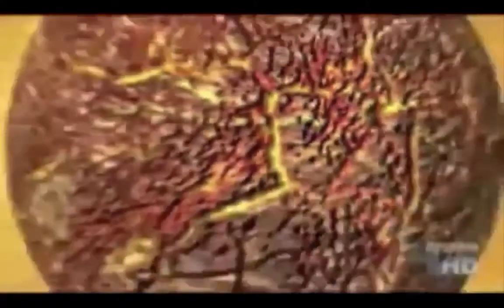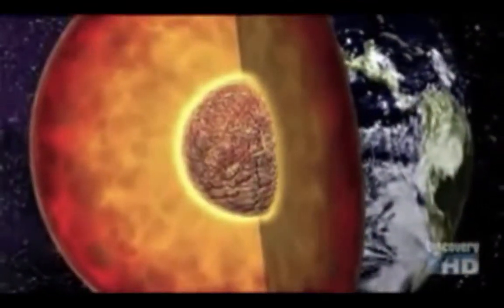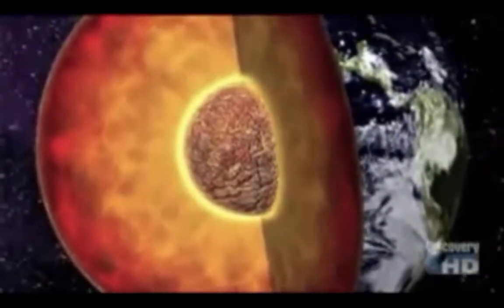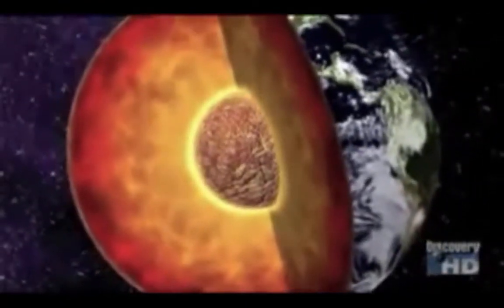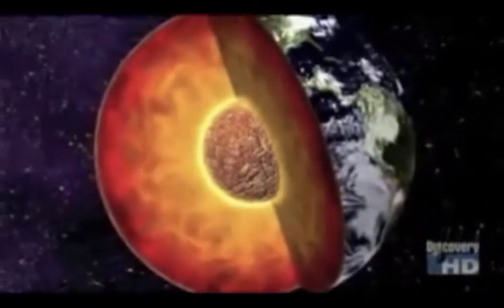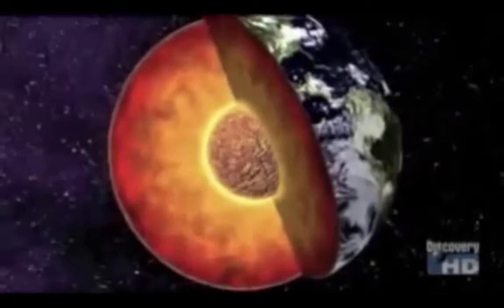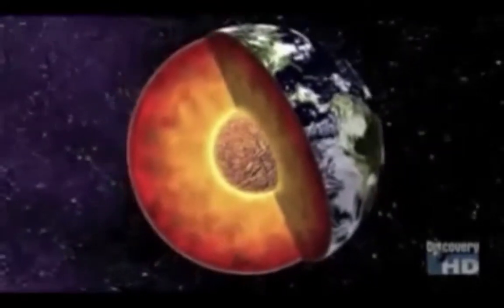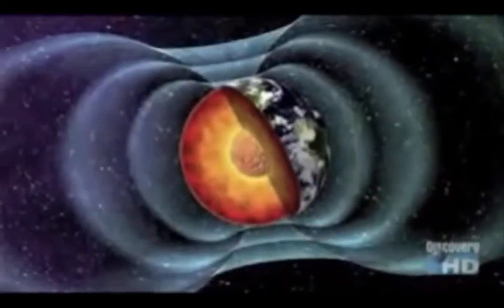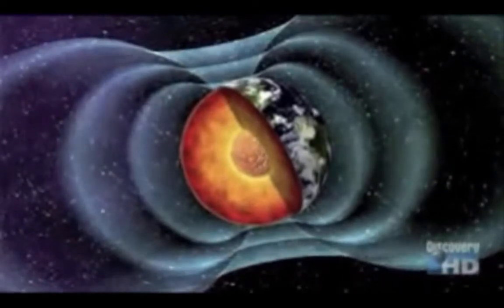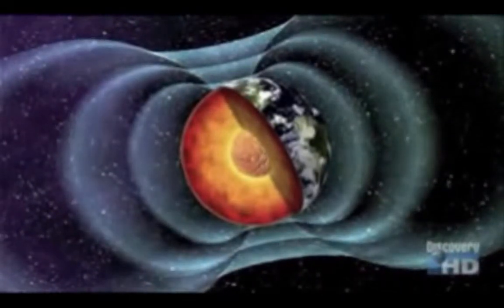4,000 degrees Fahrenheit, 4,000 miles below the Earth's crust. 1,800 miles from the tip top, the outer core is hard at work and it don't stop. It's busy spinning around the inner core. This steady movement causes Earth's magnetism, ranging from 4,000 to 9,000 degrees, and it contributes one-fifth of the heat flowing to you and me.